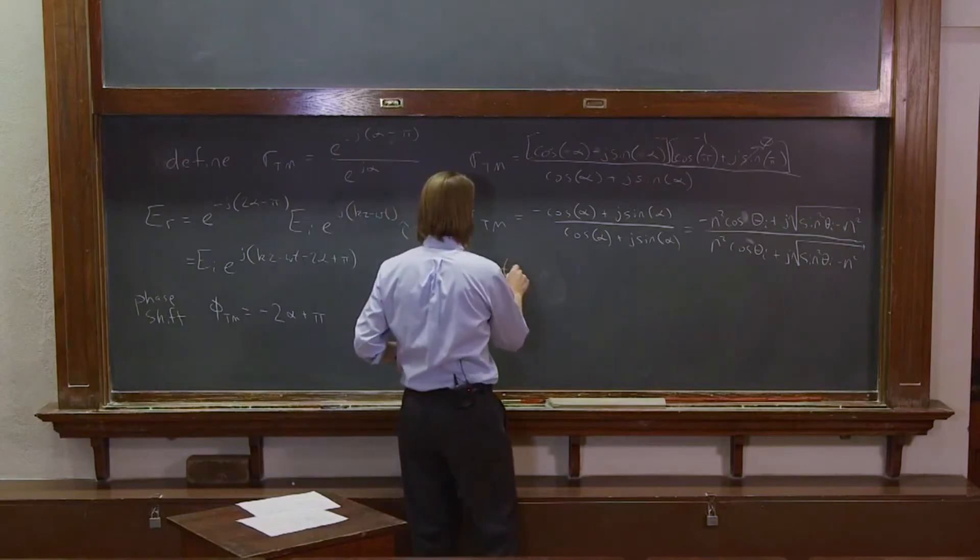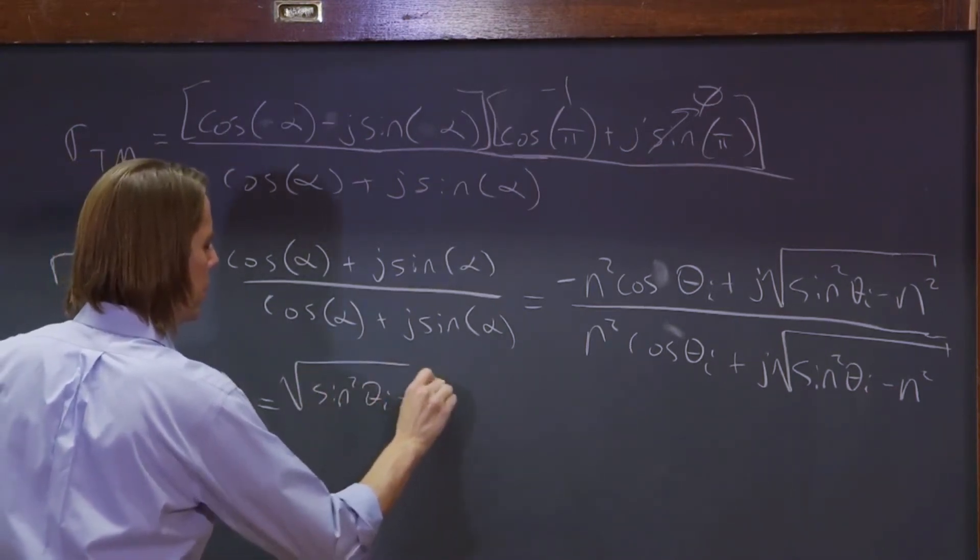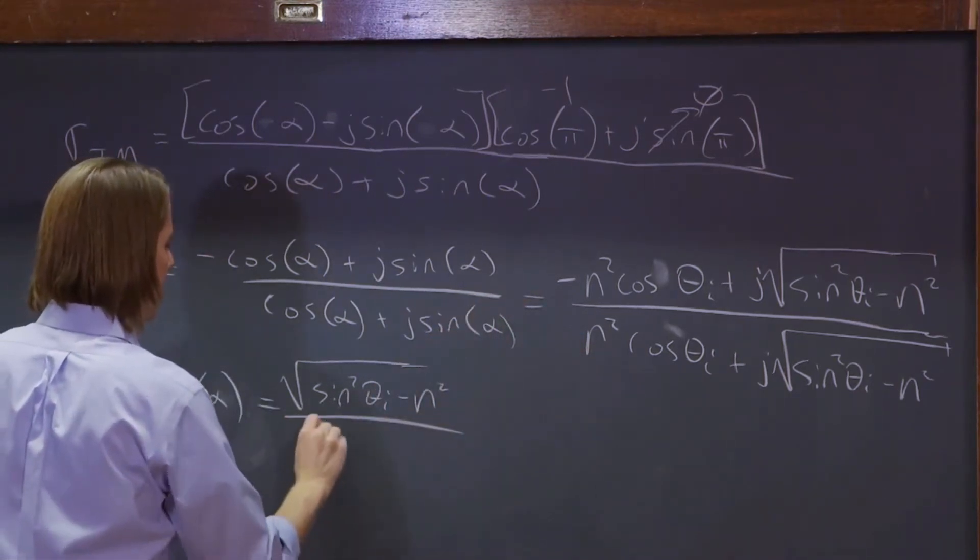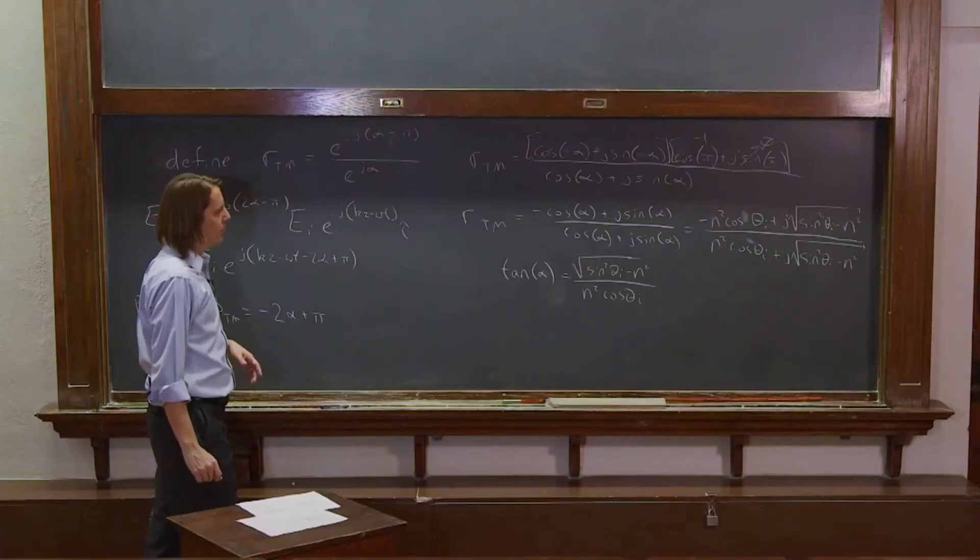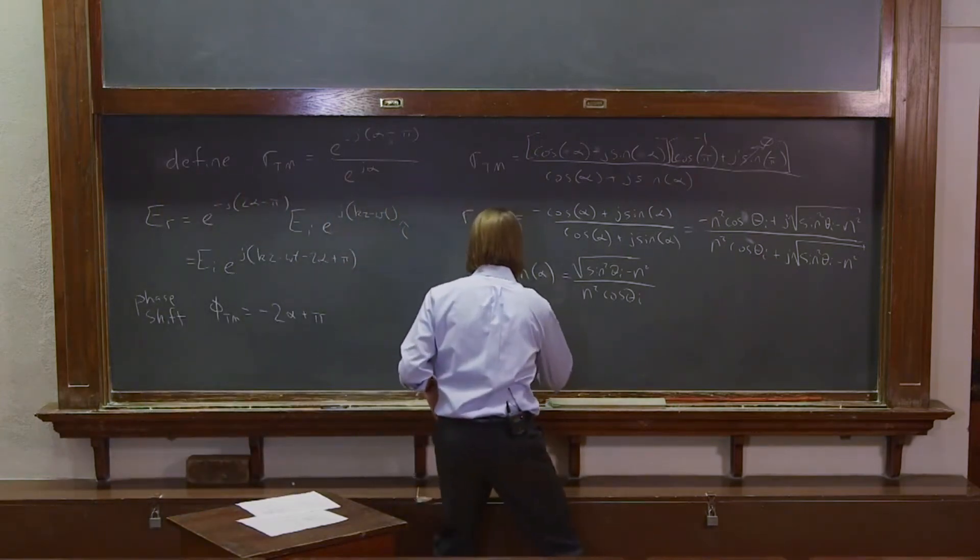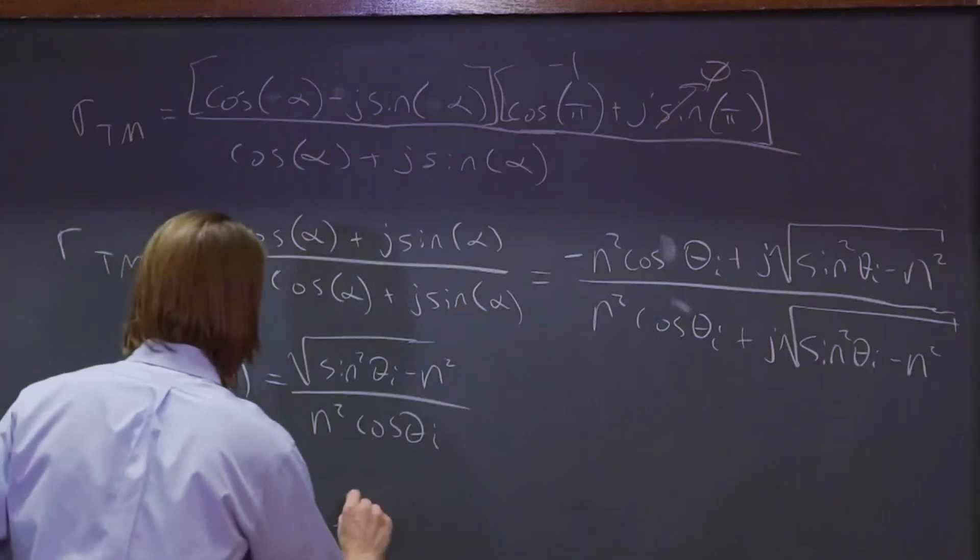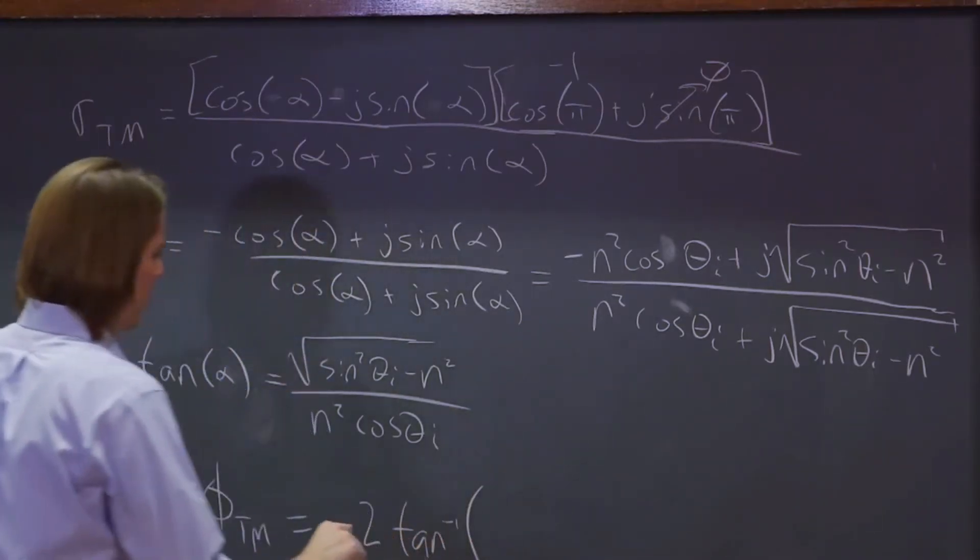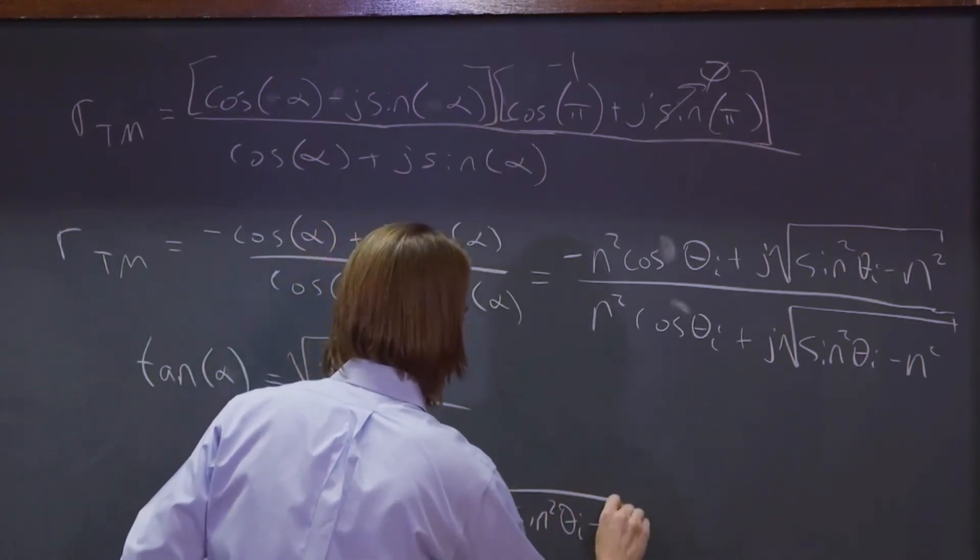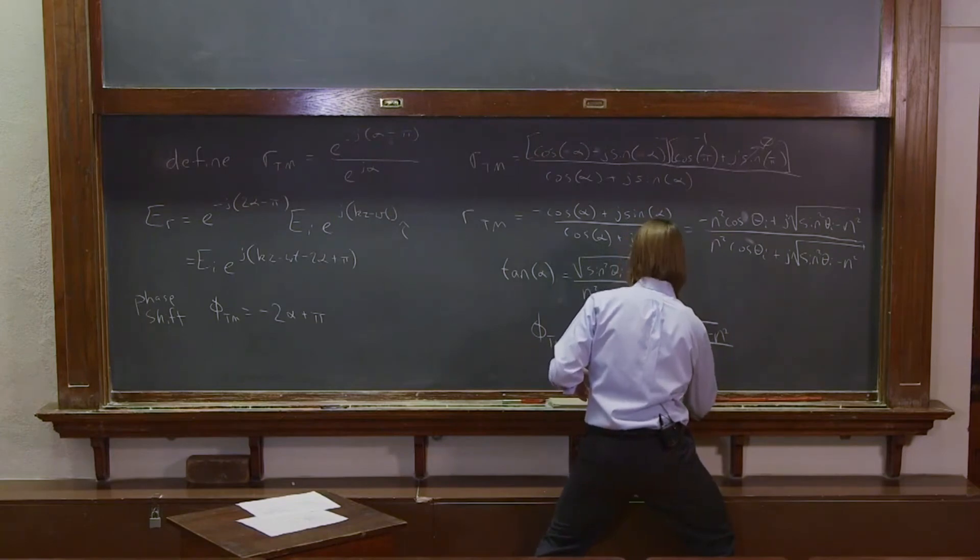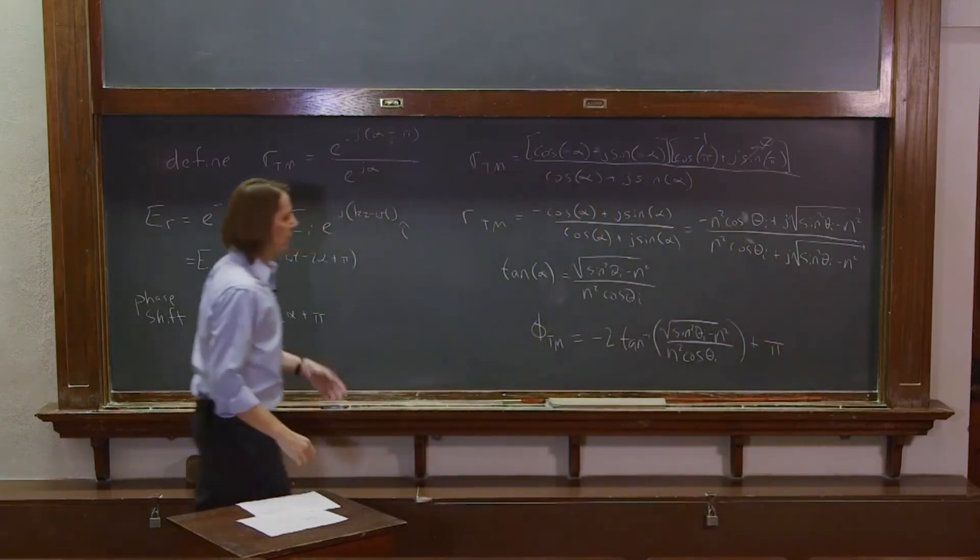OK, so then you can find that the tangent of alpha is the same square root, sine squared theta i minus n squared over n squared cosine theta i. And then you can solve for the phase, so the phi TM. We said before it's minus 2 alpha plus pi. So it's minus 2 times the inverse tangent of sine squared theta i, the square root of sine squared theta i minus n squared over n squared cosine theta i plus pi. So there is phi TM.